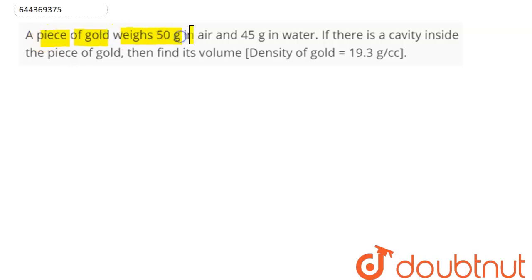A piece of gold weighs 50 grams in air and 45 grams in water. If there is a cavity inside the piece of gold, then find its volume. Density of gold is given as 19.3 grams per cubic centimeter.